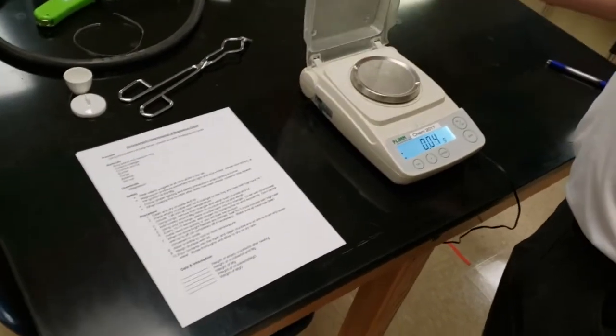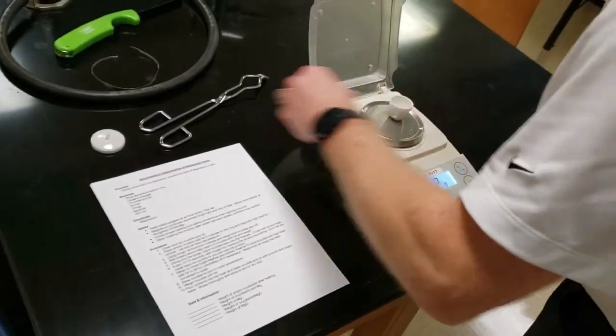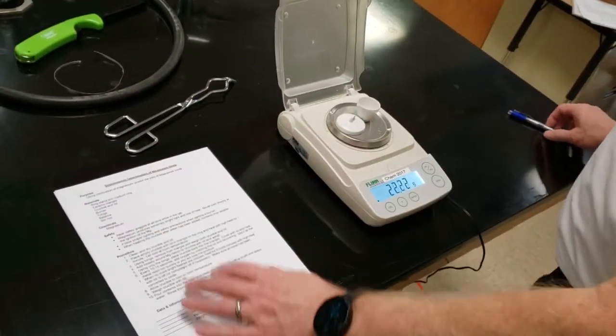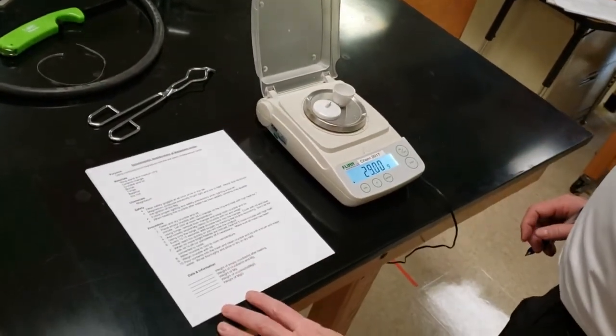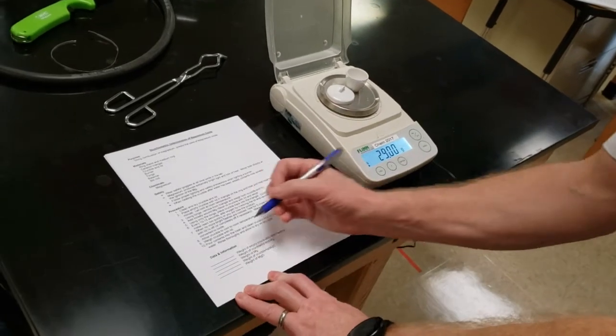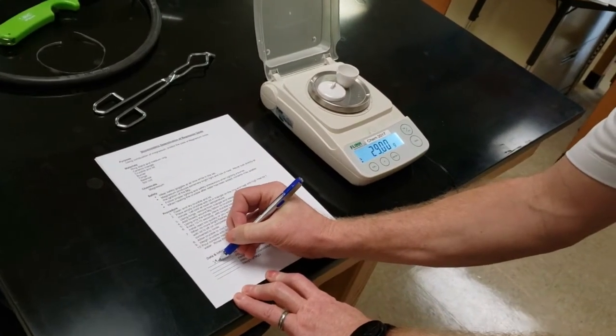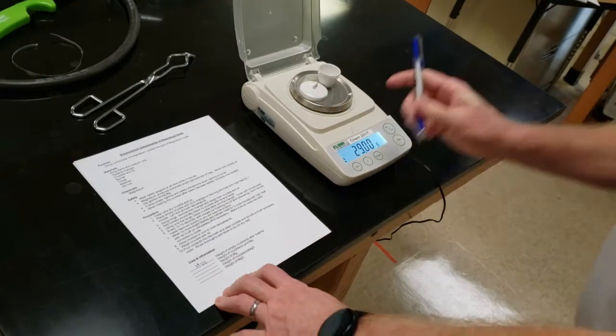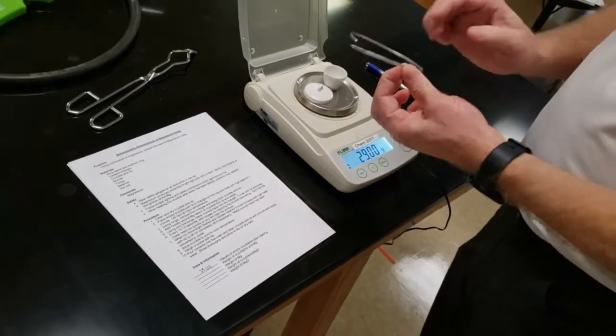We're going to zero out the balance and put on the crucible along with the lid. It doesn't have to be on top. Wait for that to stop fluctuating and write down the mass that is on there.